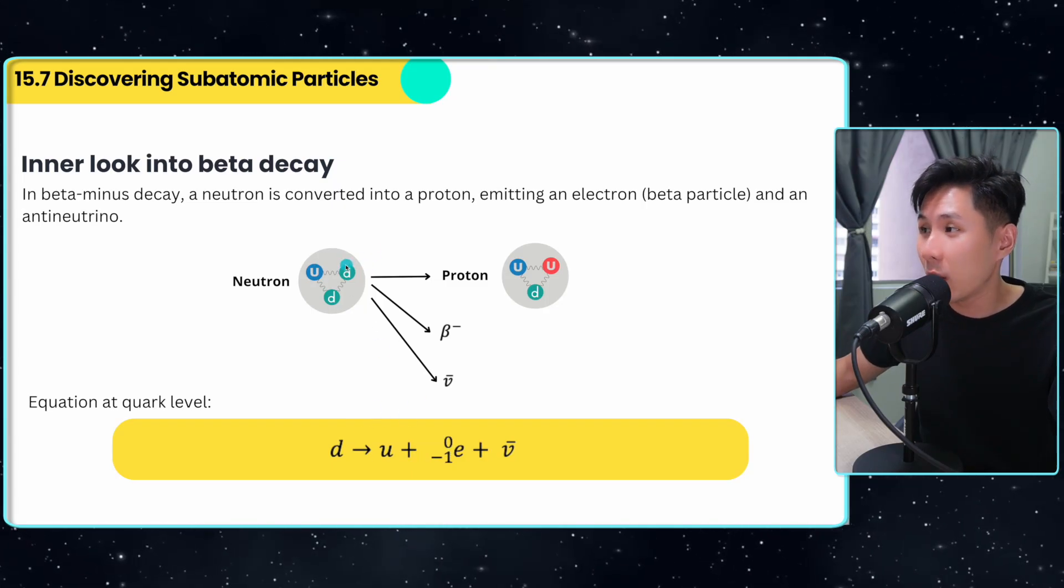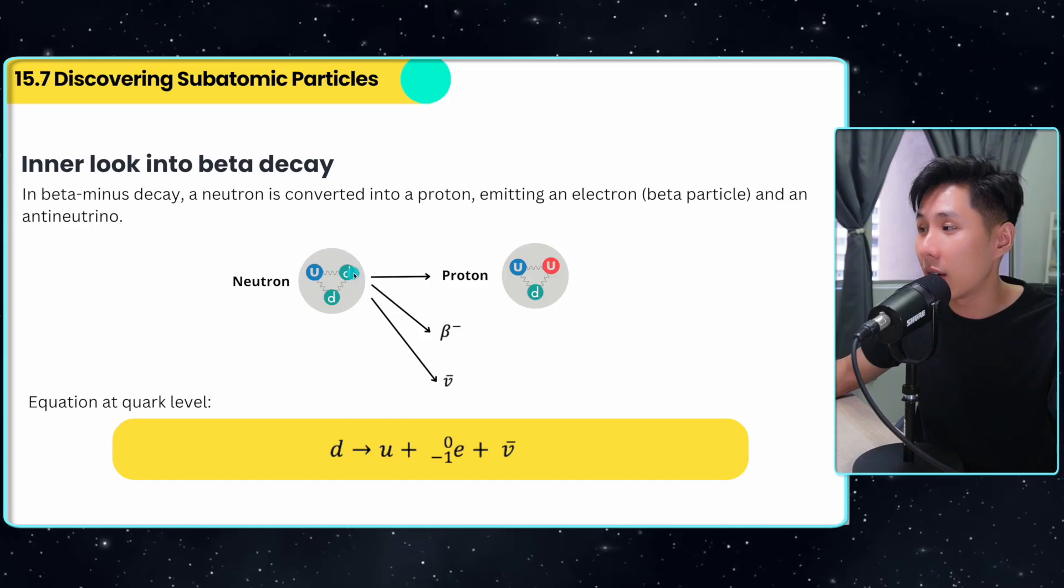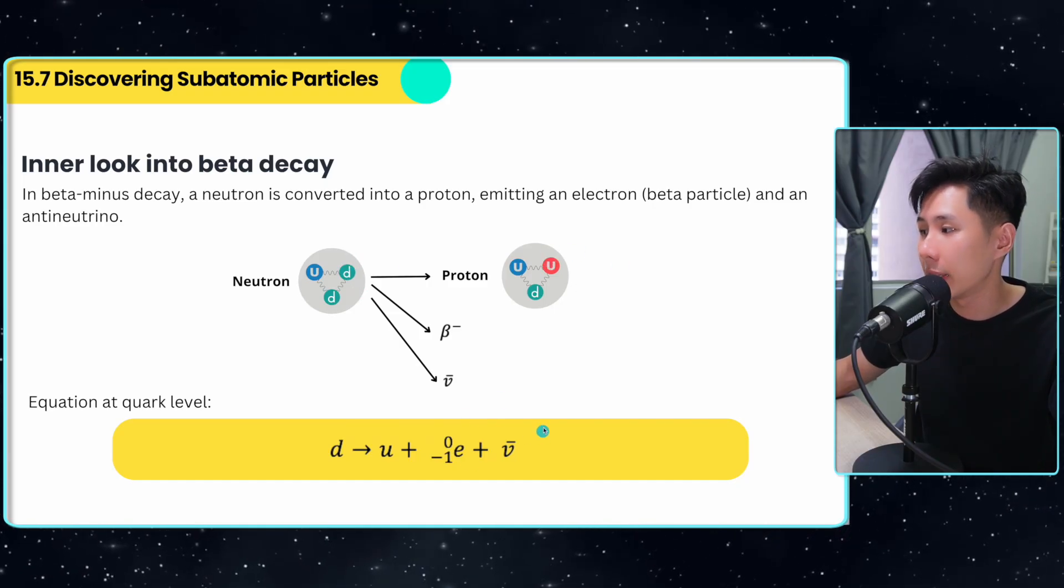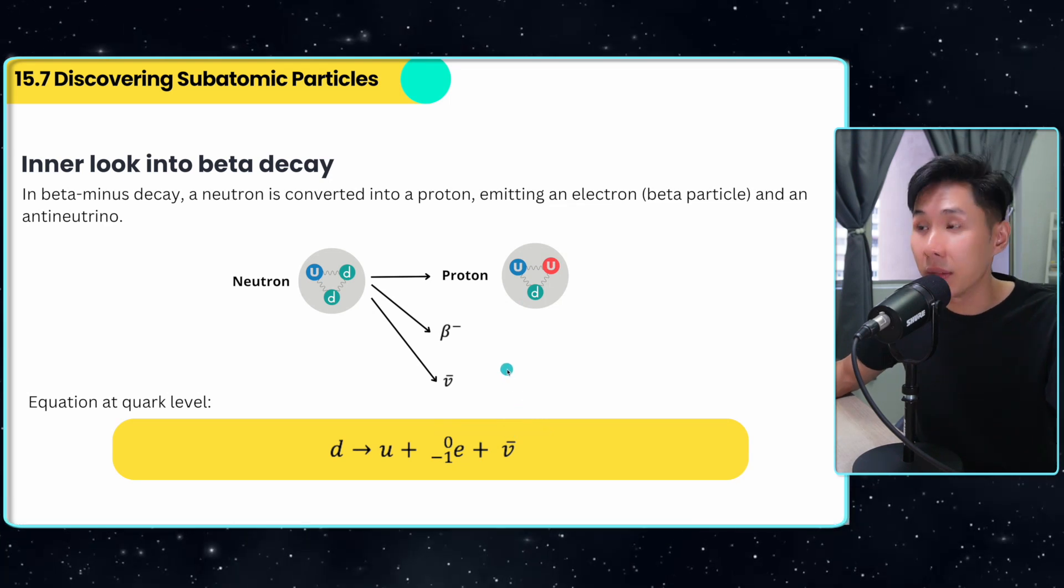If you want to discover the equation at a quark level, this is what it looks like. One down quark of the neutron is being converted into an up quark, plus an electron plus an antineutrino. That's the end of nuclear physics.